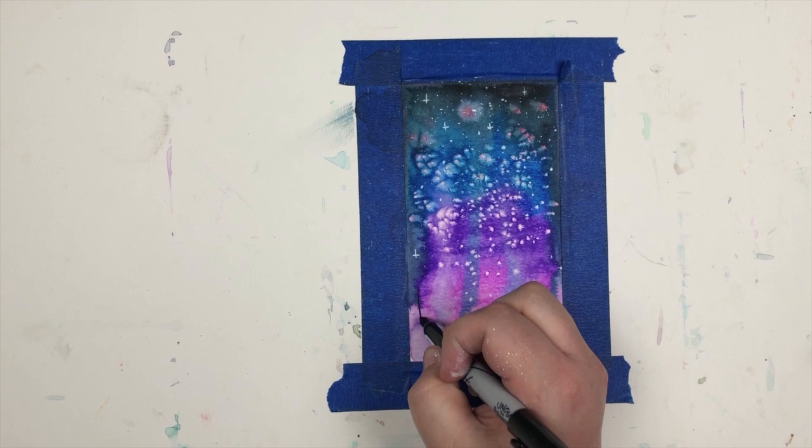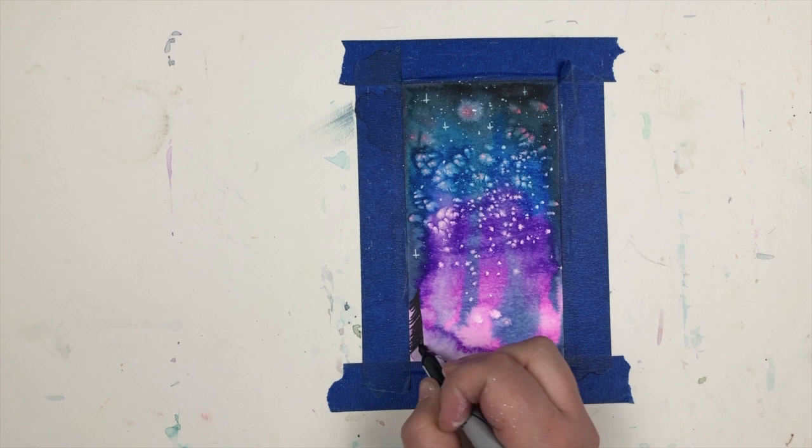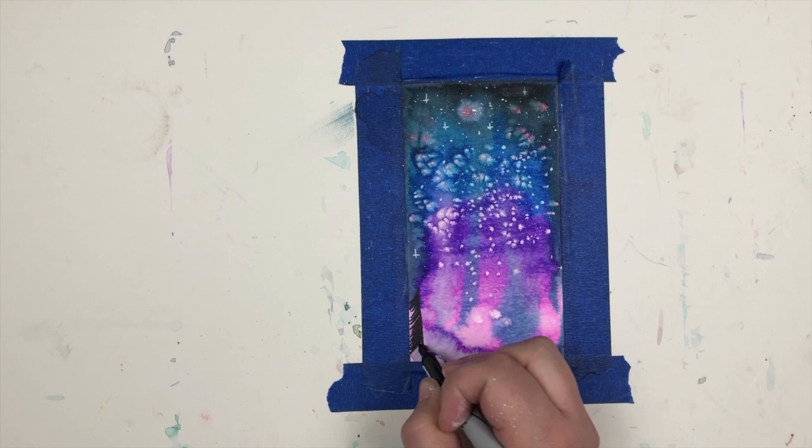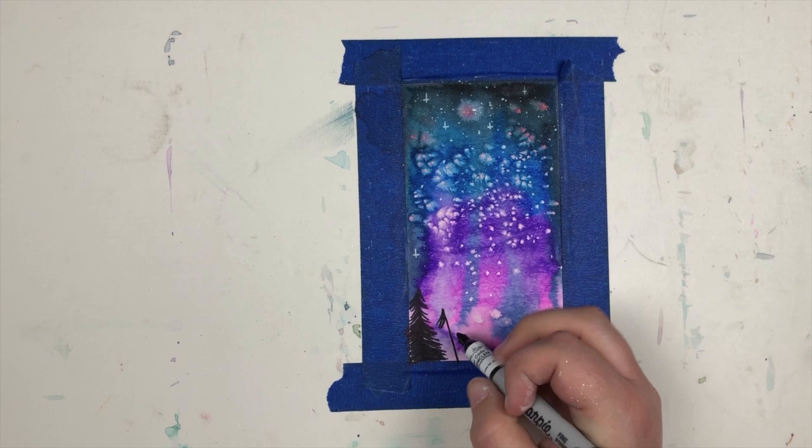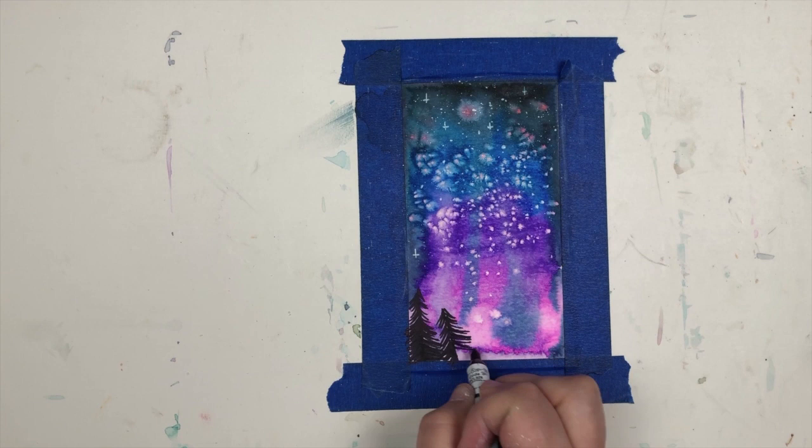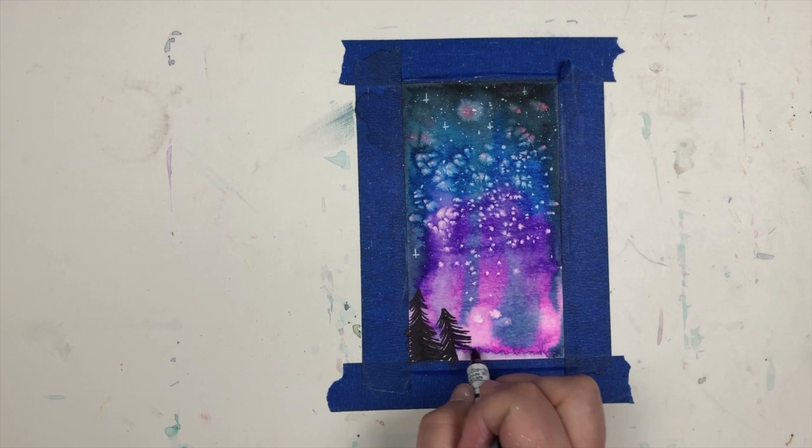We add the silhouette in the ground. I'm keeping it simple and adding pine trees by drawing a line and then adding a bunch of little swooshes on either side. You can get creative with your silhouette. I've seen silhouettes with wolves howling or big oak trees or even people kissing. One of my favorite things to do with galaxy paintings is to draw UFOs abducting cows.